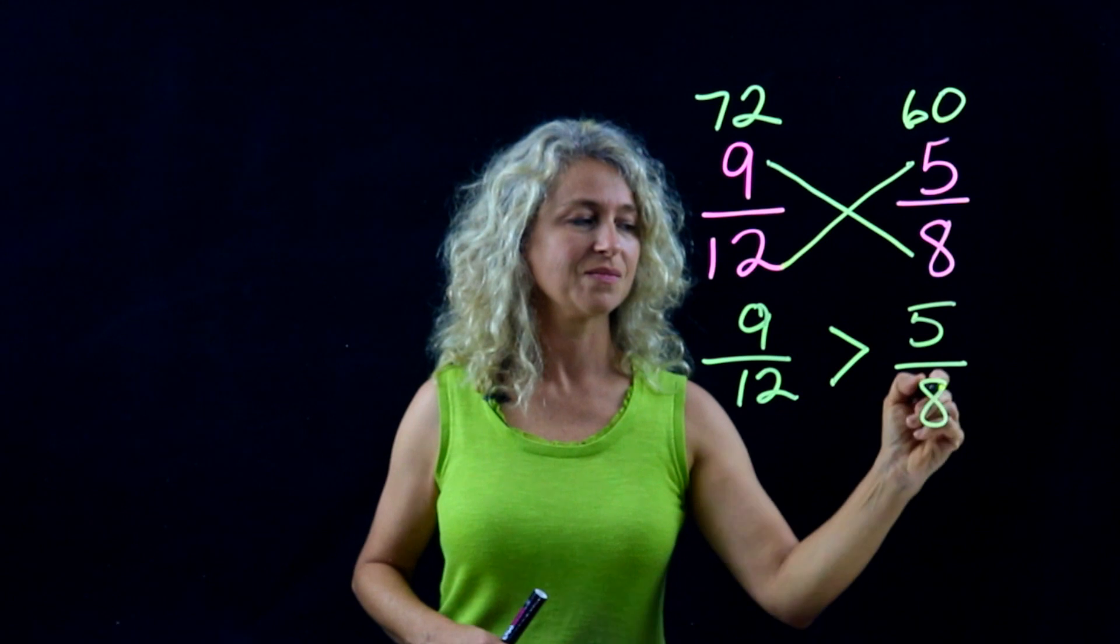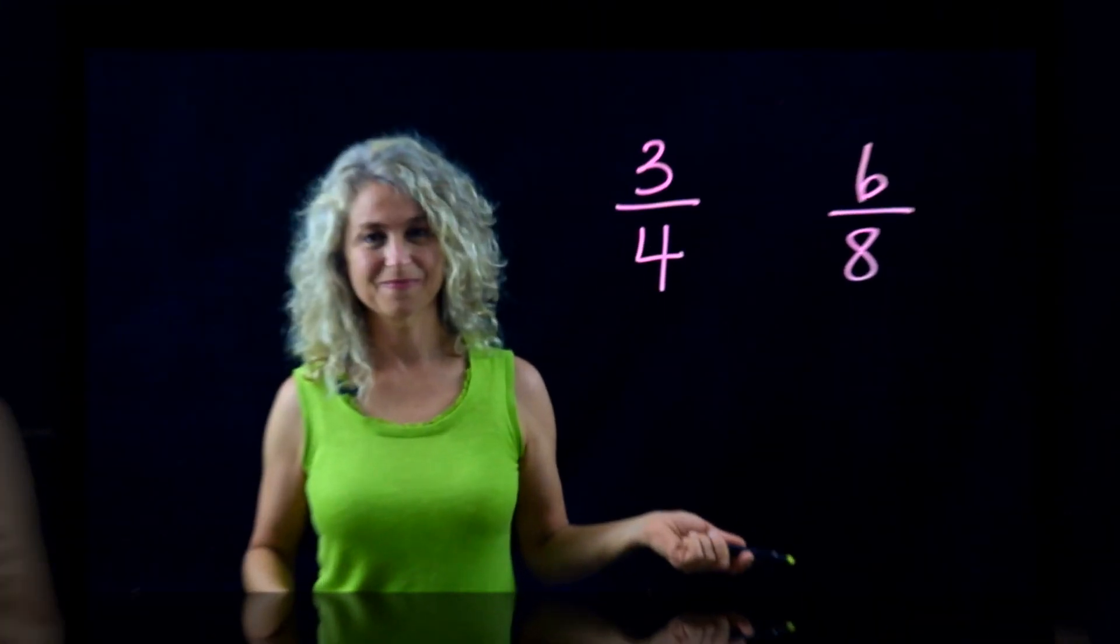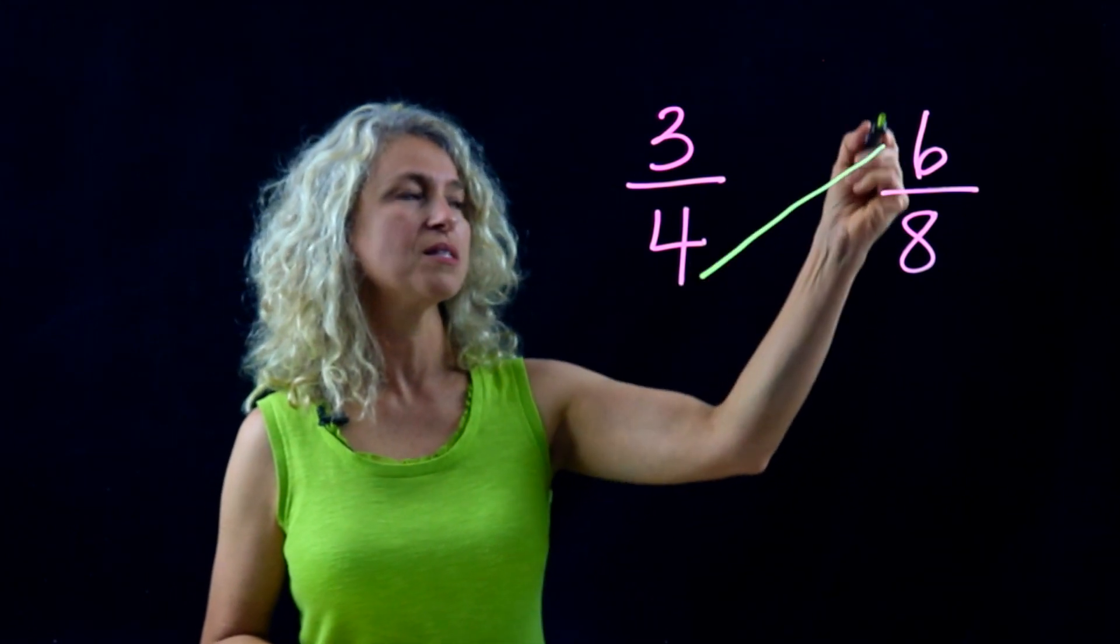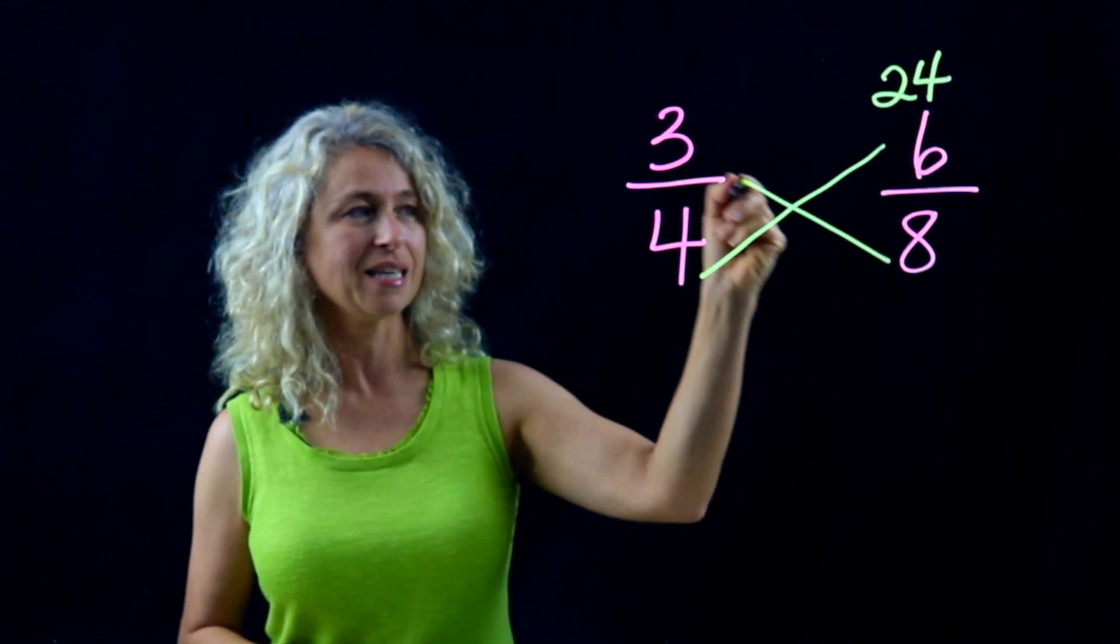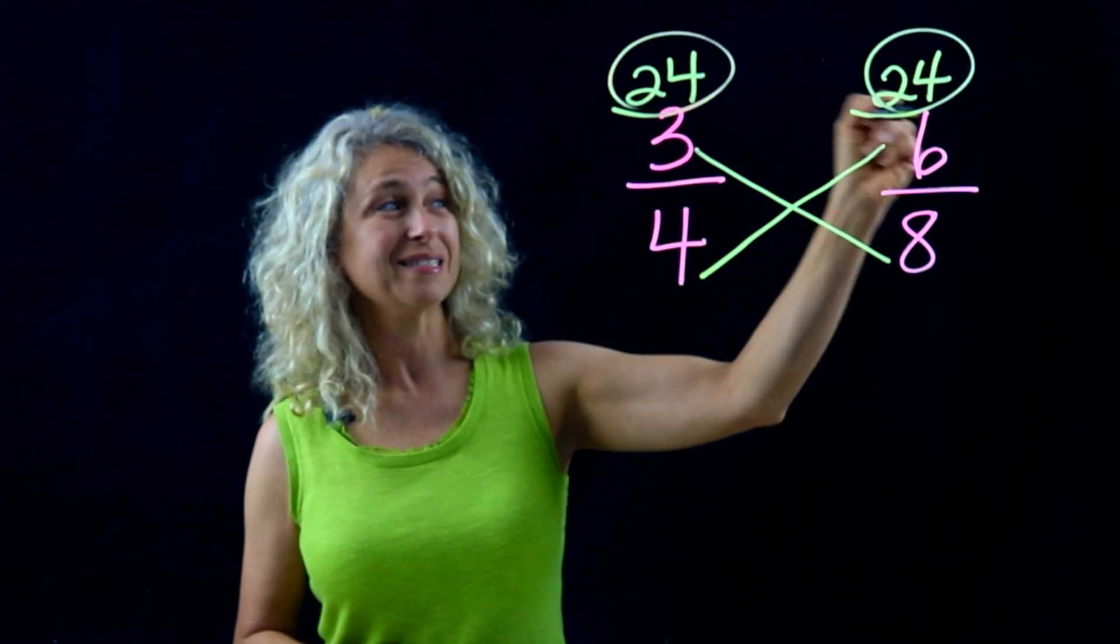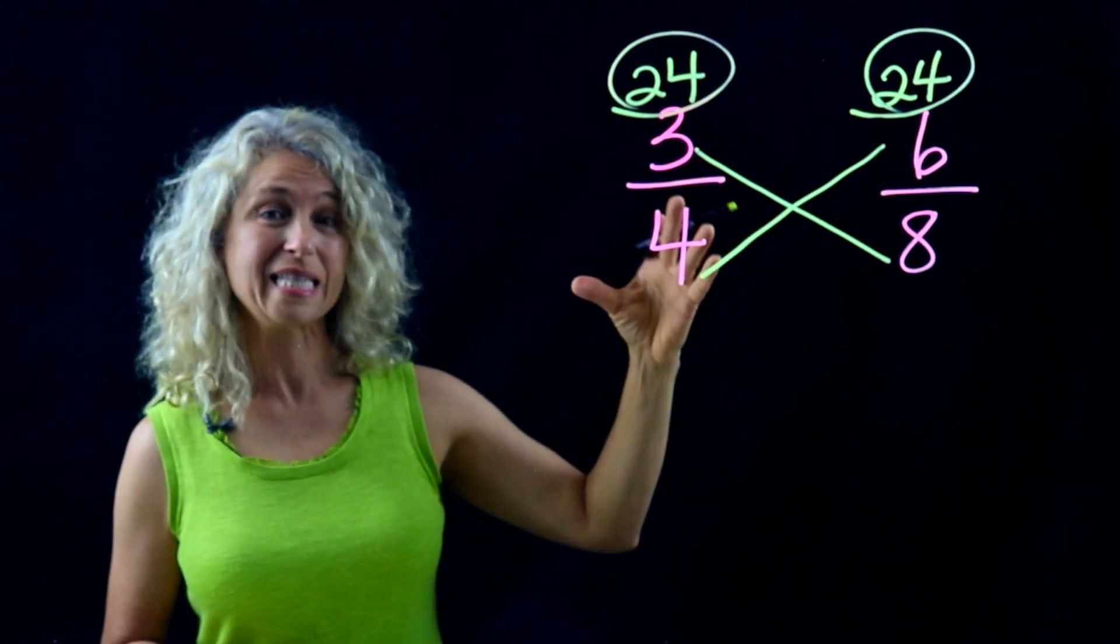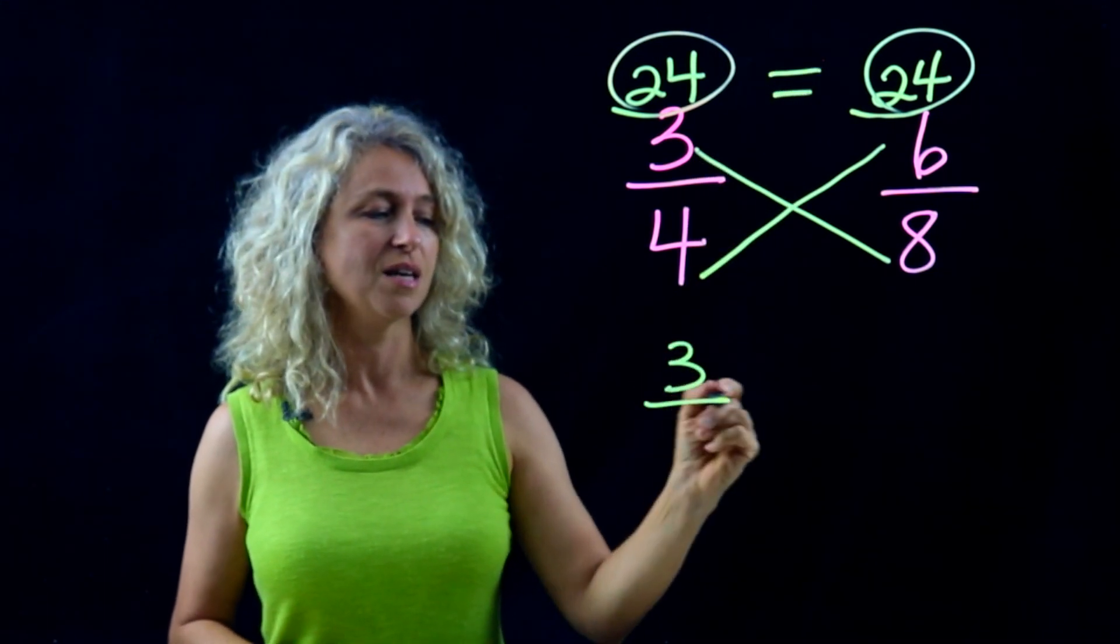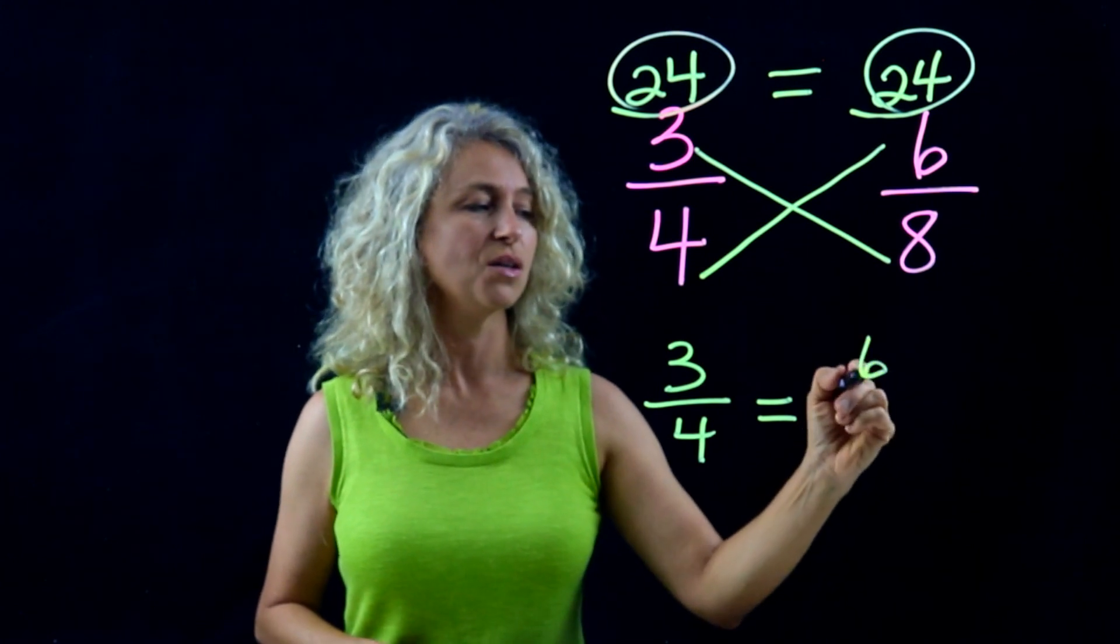So the last example: four times six is twenty-four, eight times three is twenty-four. When you get numbers that are the same, you know you found an equivalent fraction. So three-fourths is equivalent to six-eighths.